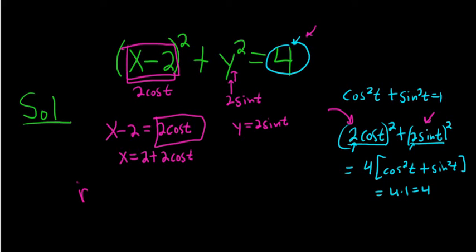So the final answer is a vector-valued function, r of t, and that's equal to x of t, i hat, plus y of t, j hat.